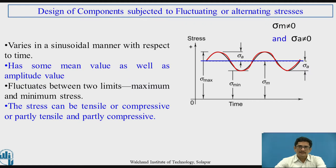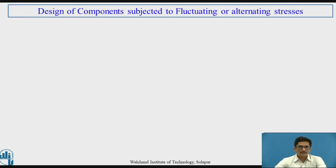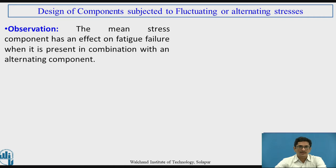For this typical case of fluctuating stress, the value of mean stress is not equal to zero and the value of amplitude stress is not equal to zero. If you consider the reverse stress case, the mean stress will be equal to zero. But this typical case deviates from that, as both sigma mean and sigma amplitude exist together and both have an effect on the design.